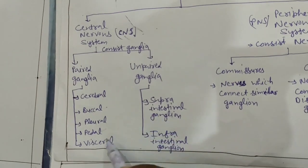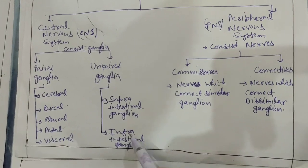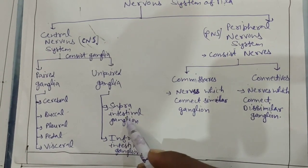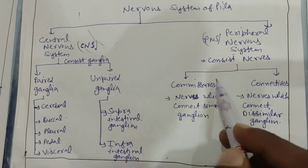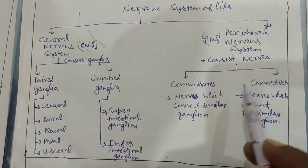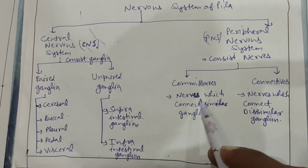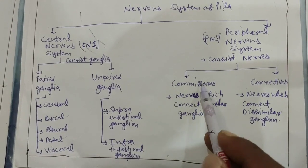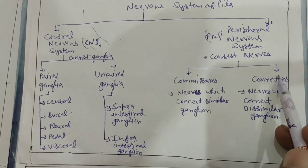These ganglia are all present as pairs. The supraintestinal ganglion and infraintestinal ganglion are present singly. In Pila globosa, the nerves are of two types: commissures and connectives. Commissures are nerves which connect similar ganglia, while connectives are nerves which connect dissimilar ganglia.